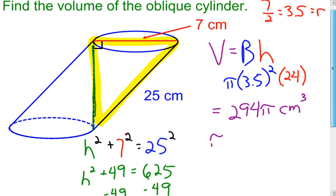For the approximate volume, I multiply 294 by pi using the pi button on my calculator, and I end up with 923.63 cubic centimeters. That concludes my lesson on examples of volumes of cylinders and prisms.